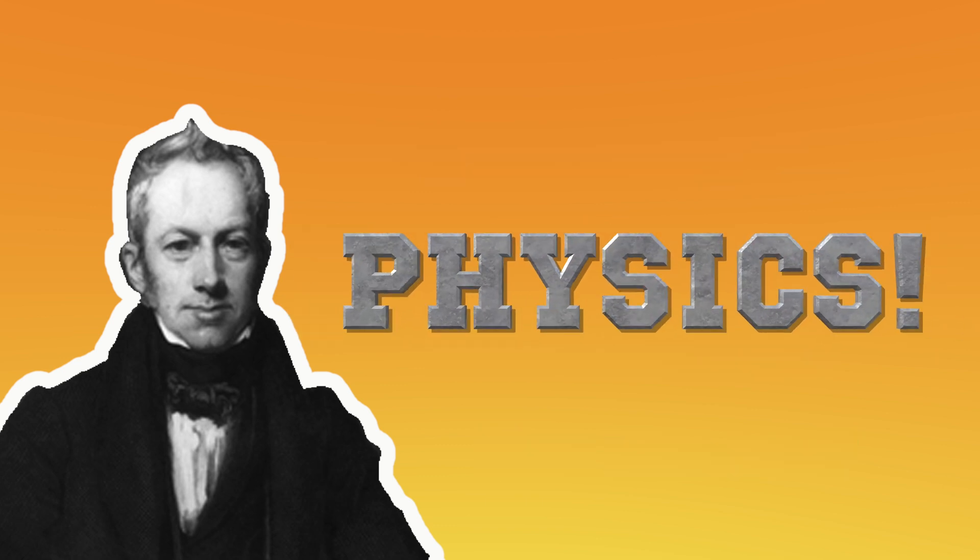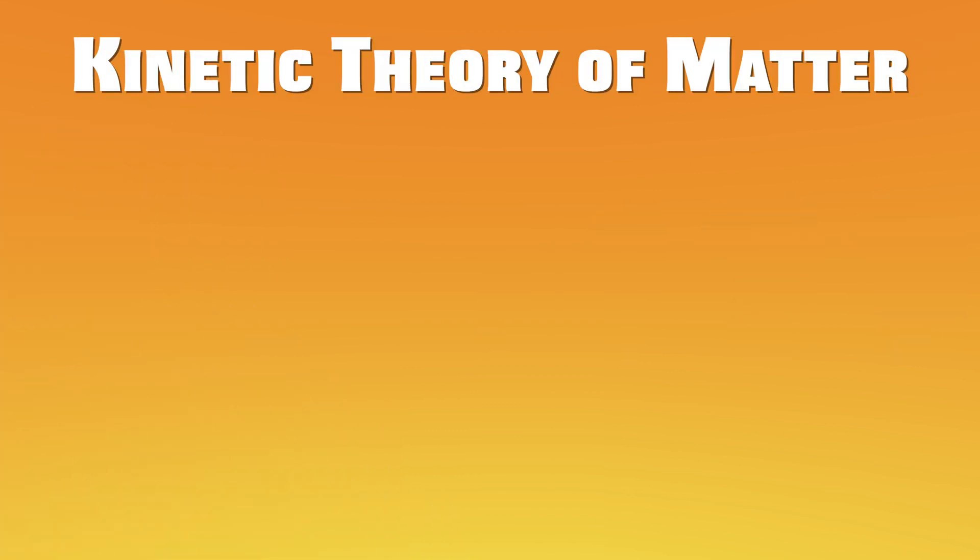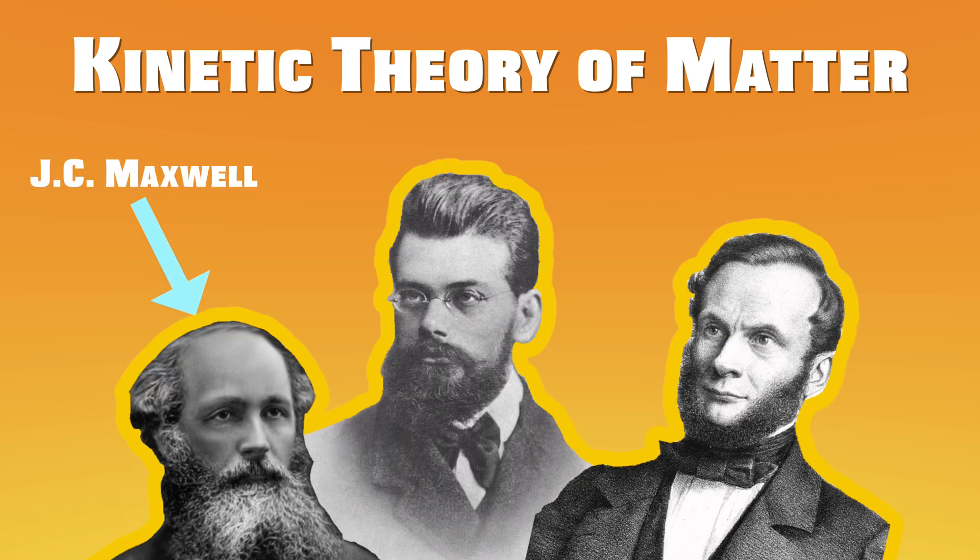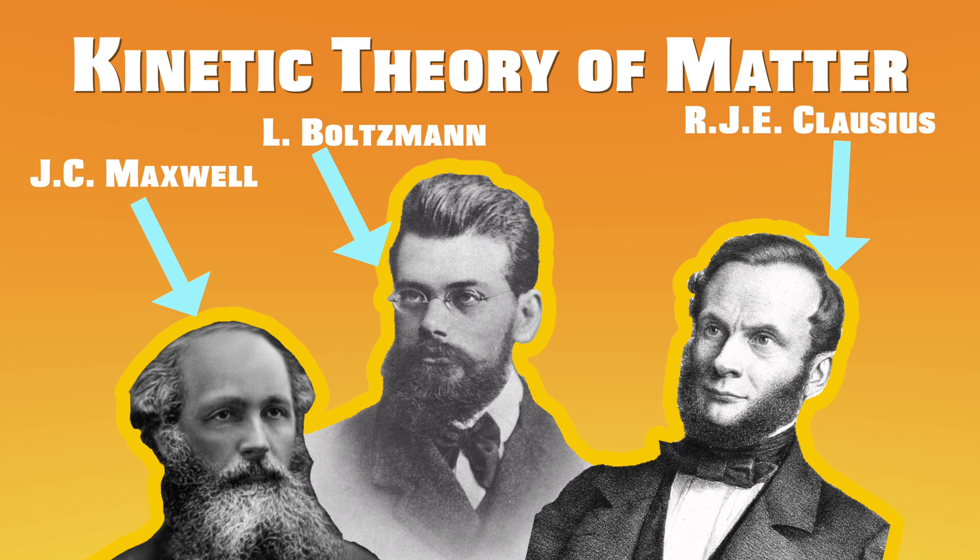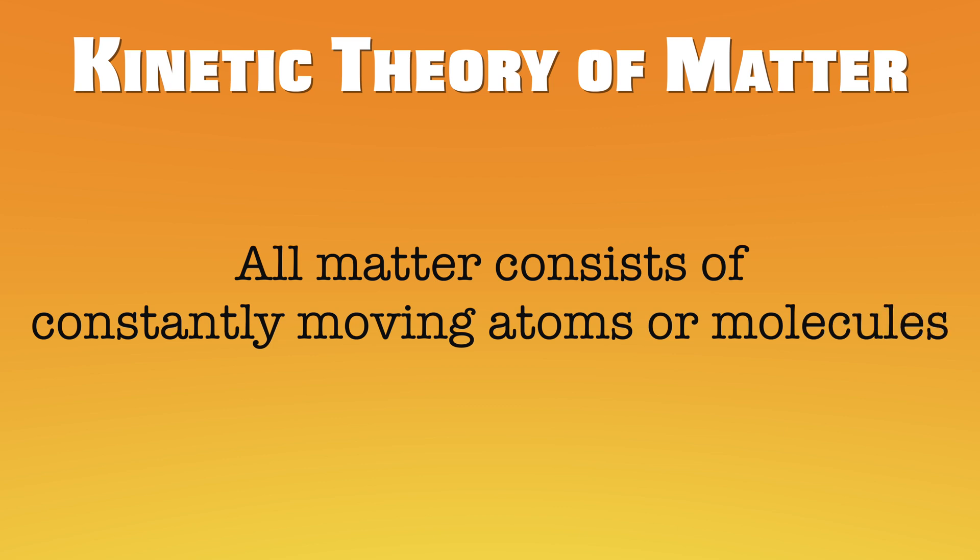However, at that point, he could not explain why this occurred. A better understanding of Brownian motion came later that century when the kinetic theory of matter, proposed by scientists such as James Clerk Maxwell, Ludwig Boltzmann, and Rudolf Clausius, argued that all matter consists of constantly moving atoms or molecules.